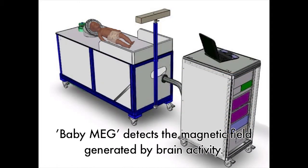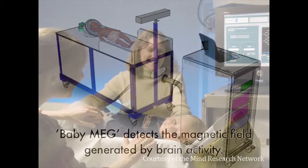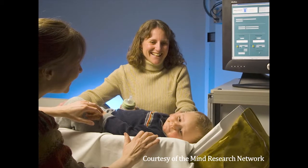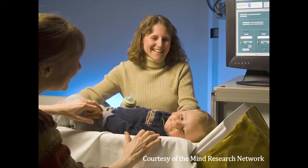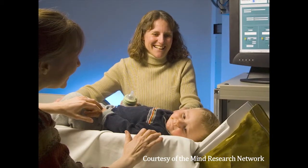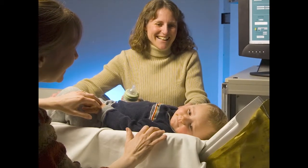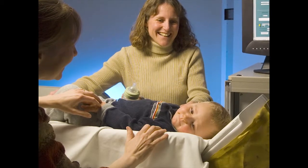Magnetoencephalography, instead of looking at consumption of a fuel neurons use like in NIRS, we use it to measure the actual fluctuations in magnetic fields caused by the electrical neural activity. Currently only adult head-sized systems exist. With funding from the National Science Foundation we are building the first MEG optimized for kids up to three years of age, which we call the baby MEG. The baby MEG will allow us to detect and localize neural activity to better understand how neurons begin to work together to perform important cognitive functions.